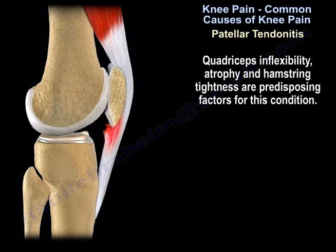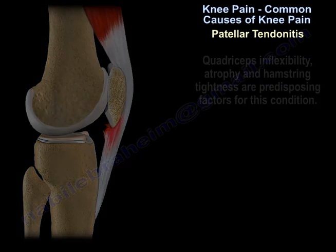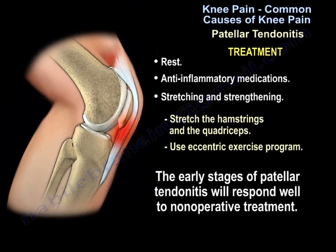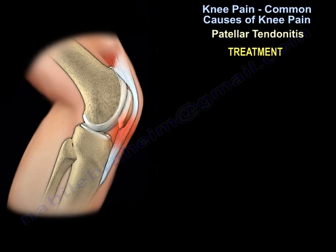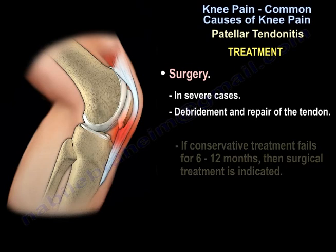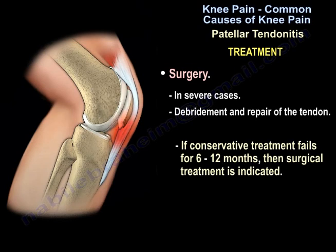Quadriceps inflexibility, atrophy, and hamstring tightness are predisposing factors for this condition. Treatment includes anti-inflammatory medication, stretching and strengthening of the hamstring and quadriceps, and an eccentric exercise program. The early stages of patellar tendonitis will respond well to non-operative treatment. Surgery in severe cases involves debridement and repair of the tendon if conservative treatment fails for 6 to 12 months.